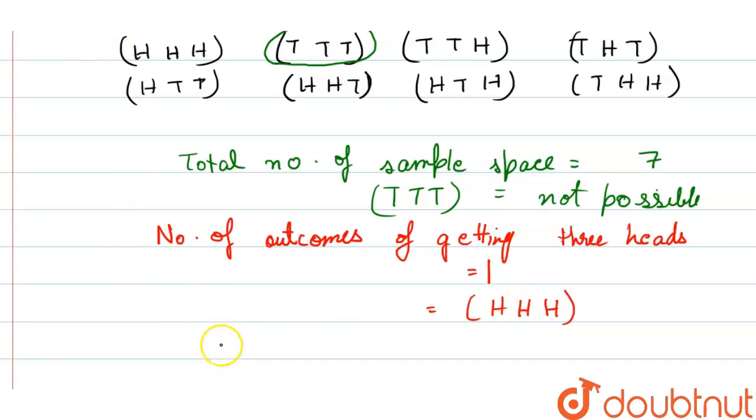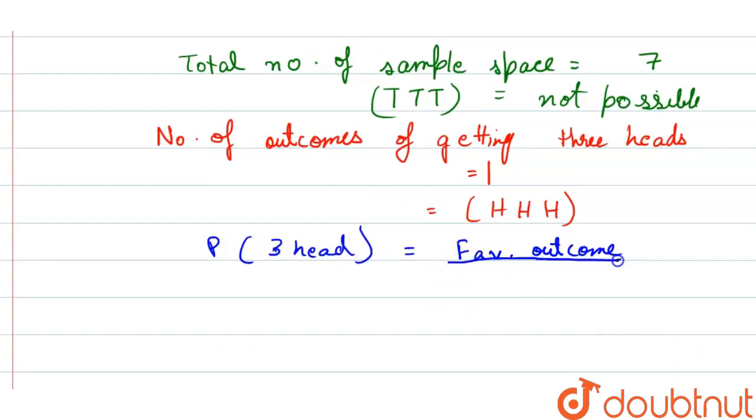Of three heads, that will be P of three heads, that is favorable outcome by total outcome. So we have favorable outcome as one and total outcome as seven, so this will be the answer for this question, that is one by seven.